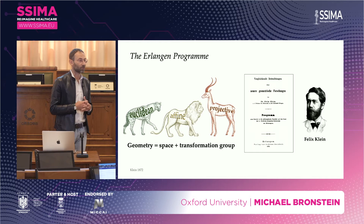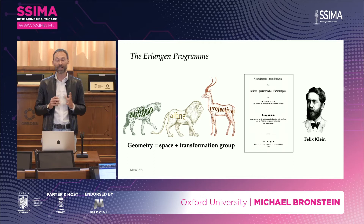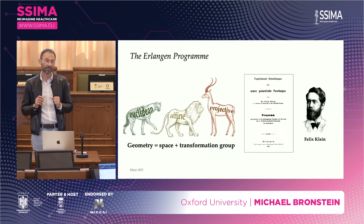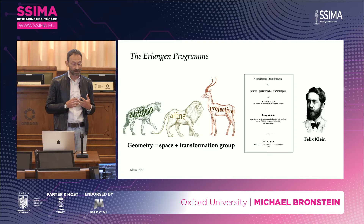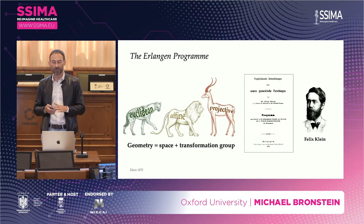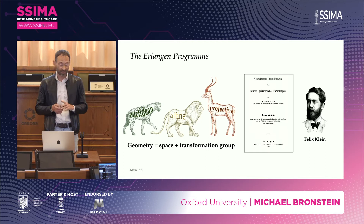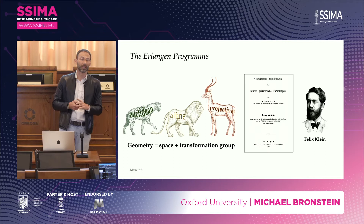Felix Klein was only 23 years old when he was appointed professor at the University of Erlangen. He suggested an algebraic approach to defining geometry as a space with a group of transformations attached to it. For example, you can define Euclidean geometry arising from the group of rigid motions, or projective geometry — the more general one — from projective transformations. This entered the history of mathematics as the Erlangen program, even though Klein stayed there just three years before settling in Göttingen.